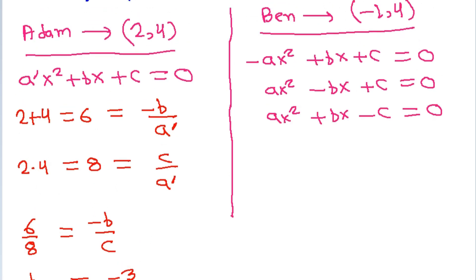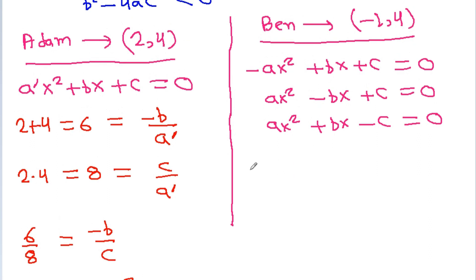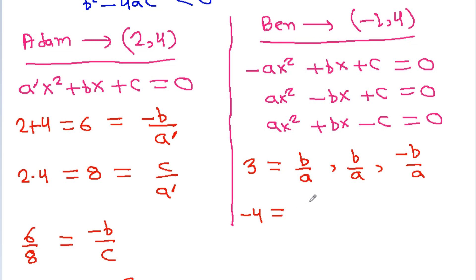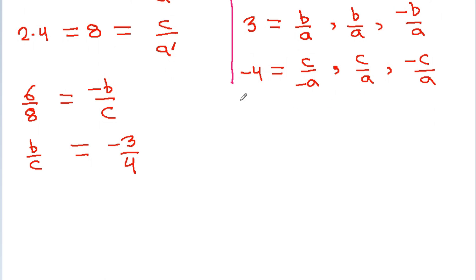Ben got roots -1 and 4. The sum of roots is -1+4=3, which equals -b/(-a) = b/a from the first equation, b/a from the second equation, and -b/a from the third equation. The product of roots is -1×4=-4, equal to c/(-a) from the first equation, c/a from the second, and -c/a from the third. Since b/c is negative, b and c must have opposite sign.